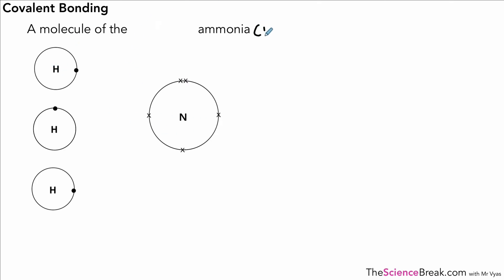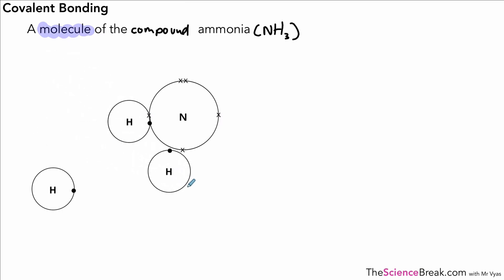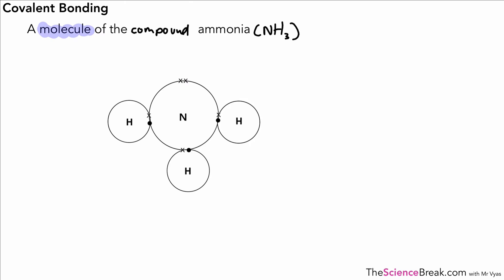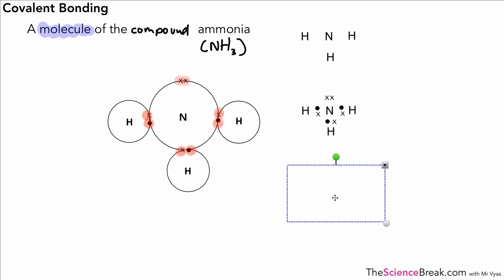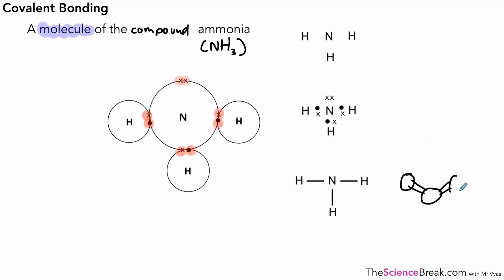Next we have ammonia — a molecule of the compound ammonia, NH₃, made of hydrogen and nitrogen. It's a covalent molecule, a small molecule. Nitrogen has five electrons on the outer shell, and the three hydrogen atoms join on to share electrons. That gives eight electrons in the outermost shell of nitrogen and all the hydrogens have a full outermost shell as well. Here's our summarized version without the shells, and the simplest line version, and our fourth ball-and-stick version — NH₃.